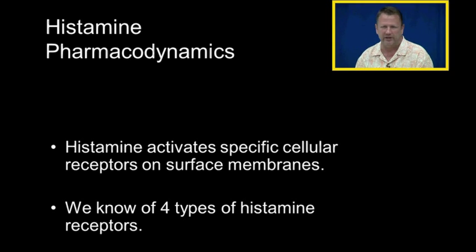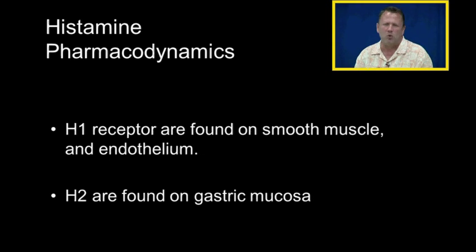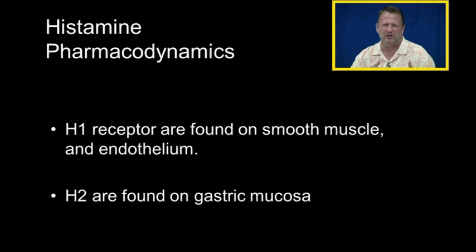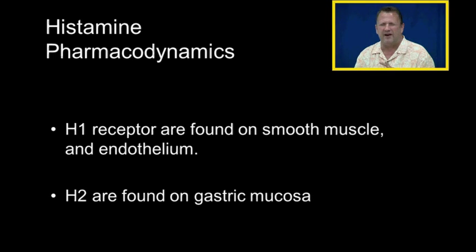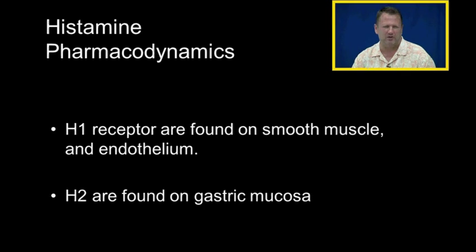H1 receptors are found on smooth muscles and endothelium — the lining inside of a blood vessel — and are associated with inflammation. H2 receptors are found on the gastric mucosa, the lining of the stomach, and are associated with histamine as a neurotransmitter stimulating gastric acid secretion.